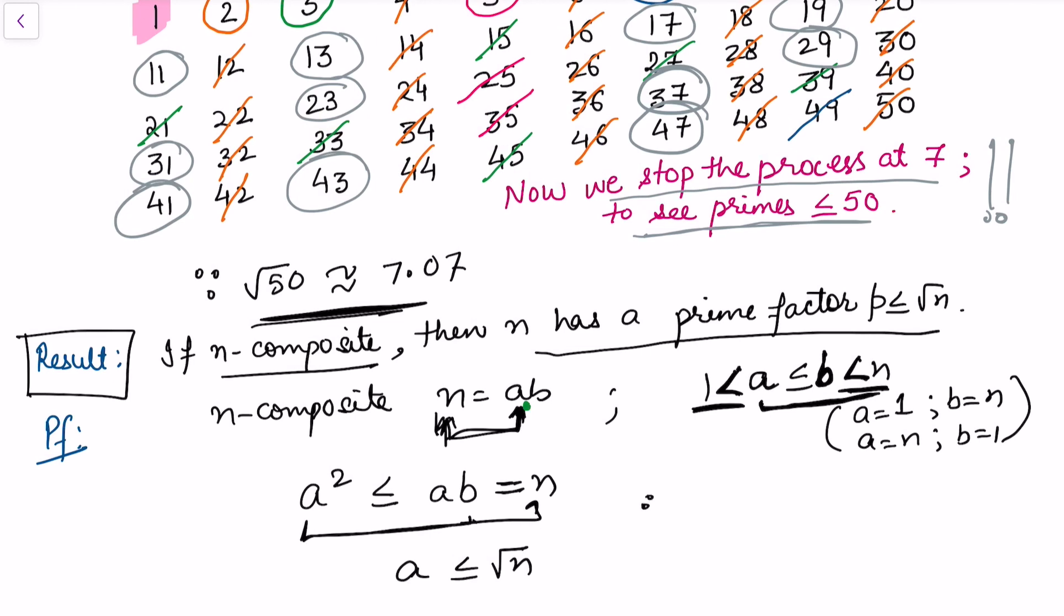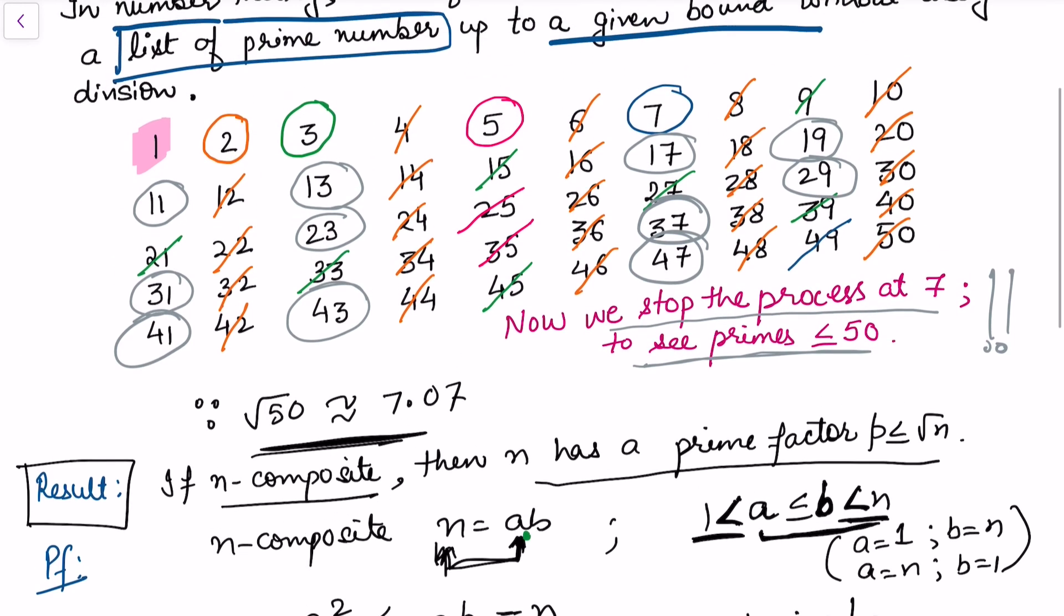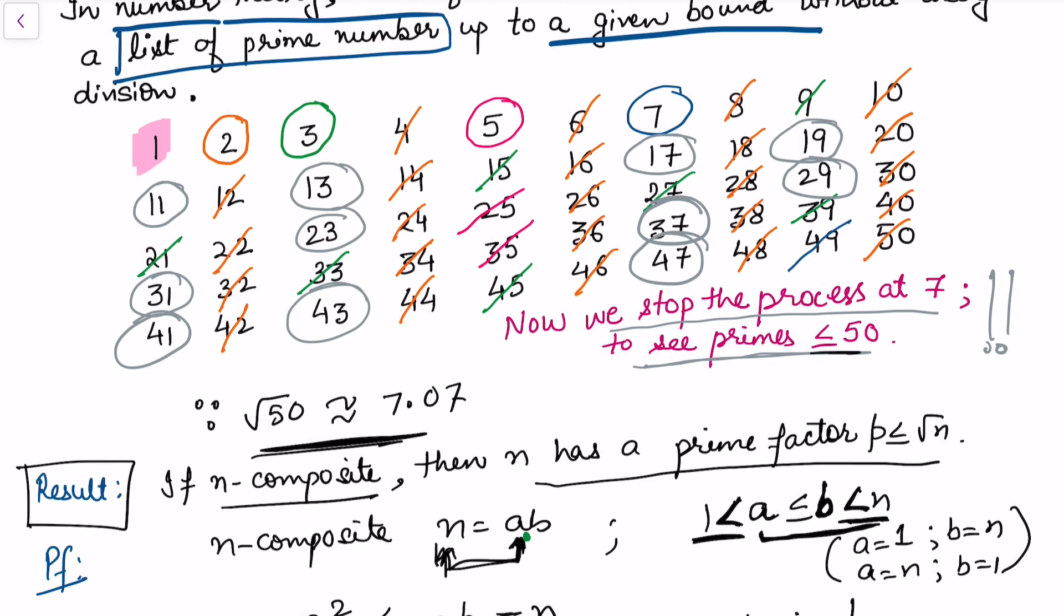So we can take that if p is a prime number which divides a, then definitely p is less than or equal to a, which is less than or equal to the square root of n. And that is how we can stop this Sieve of Eratosthenes process at this integer.